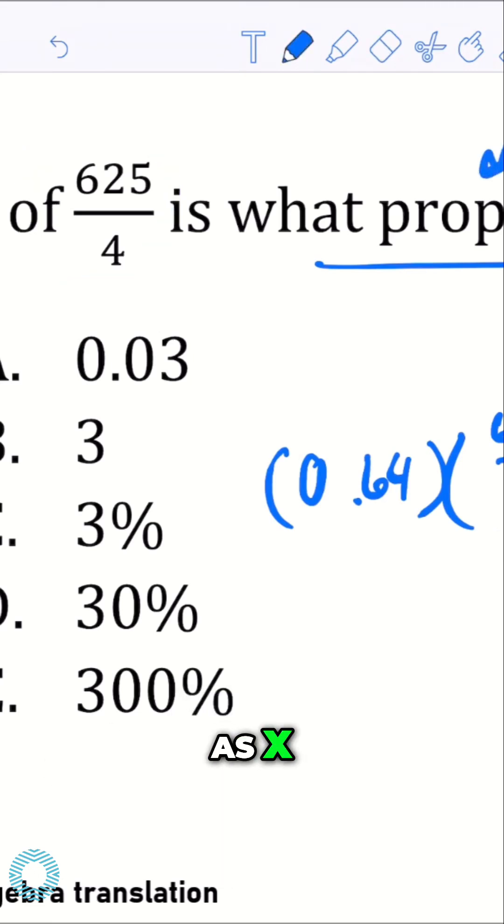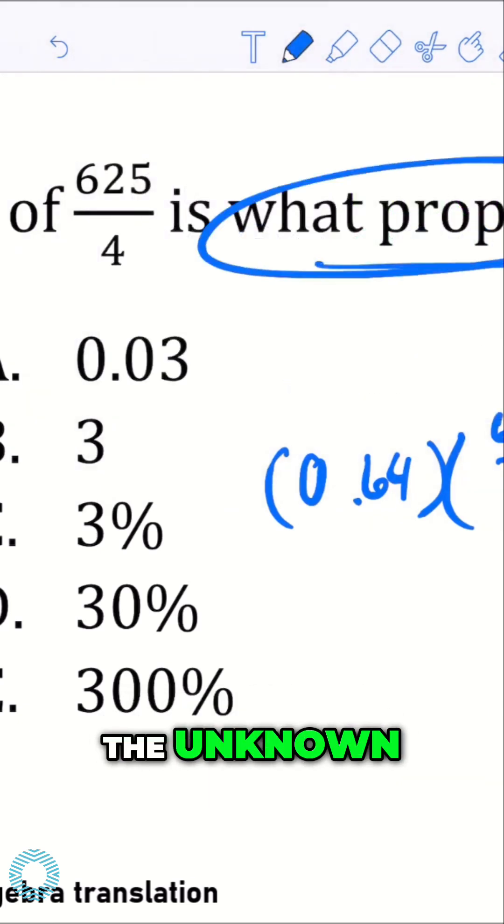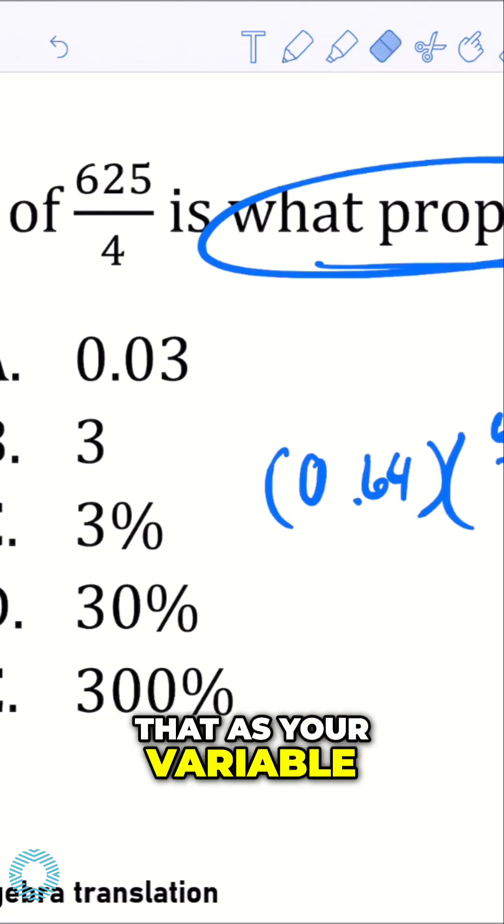Now, proportion, I just mark it as x. You can mark it as any variable. And that's the unknown, that's what we're looking for. The unknown, you want to mark that as your variable that you're solving for.